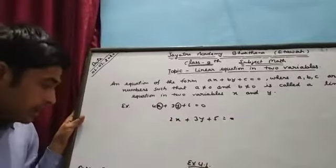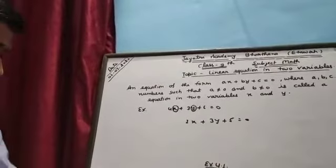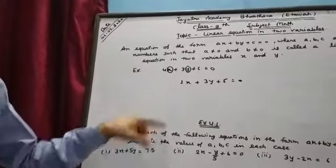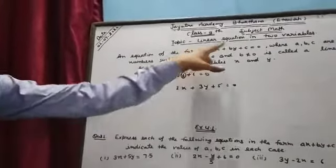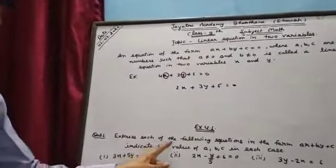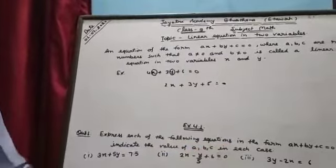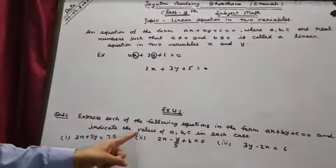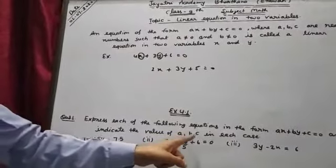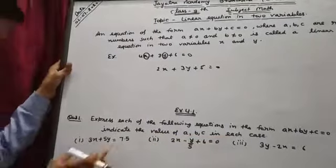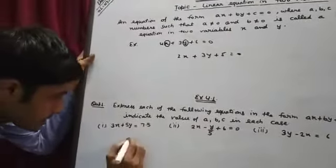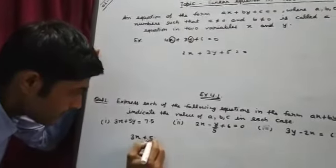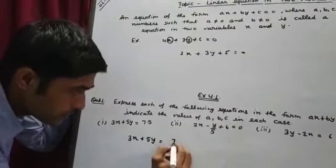Now we will discuss exercise 4.1. This whole exercise is based on this topic. Express each of the following equations in the form ax plus by plus c equal to zero and indicate the values of a, b, c in each case. The first question is 3x plus 5y equal to 7.5.